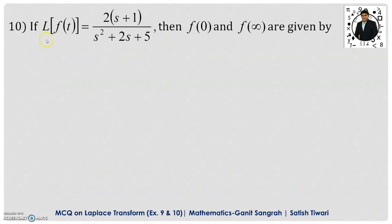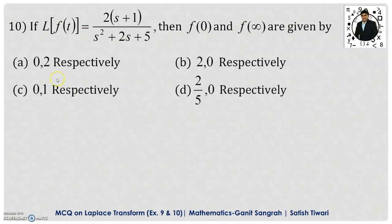Question number 10: if the Laplace transform of f(t) is given as 2(s + 1) / (s² + 2s + 5), then f(0) and f(∞) are given by. We are having four options. To find f(0) and f(∞), we apply the initial value theorem and the final value theorem of the Laplace transform.